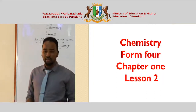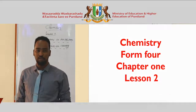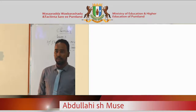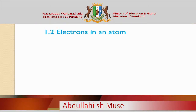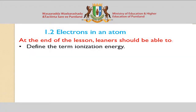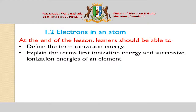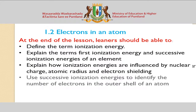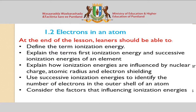Bismillahirrahmanirrahim. Chemistry, Chapter 1, Lesson 2: I will tell you about electronics in an atom. At the end of the lesson, learners should be able to define ionization energy, explain first ionization energy and successive ionization energy of an element, and explain how ionization energies are influenced by nuclear charge, atomic radius, and electron shielding.